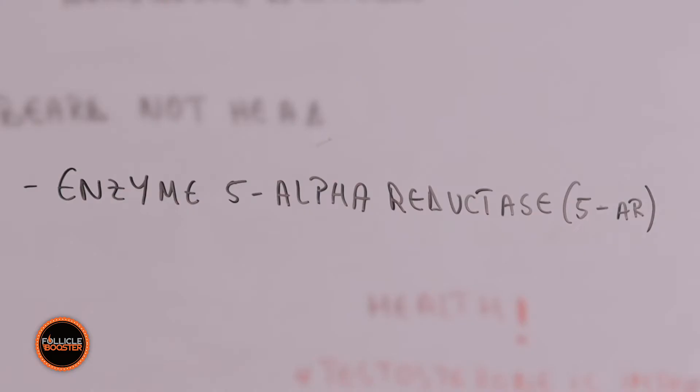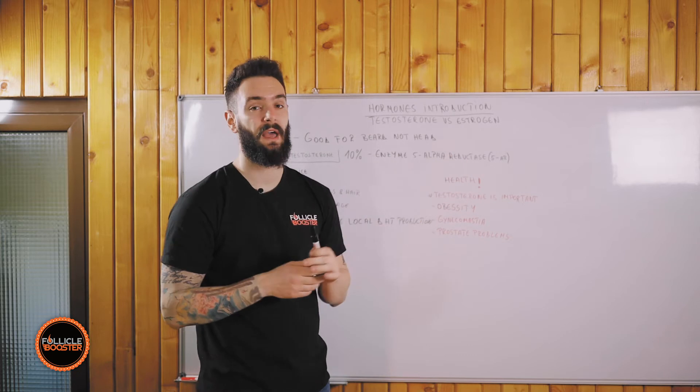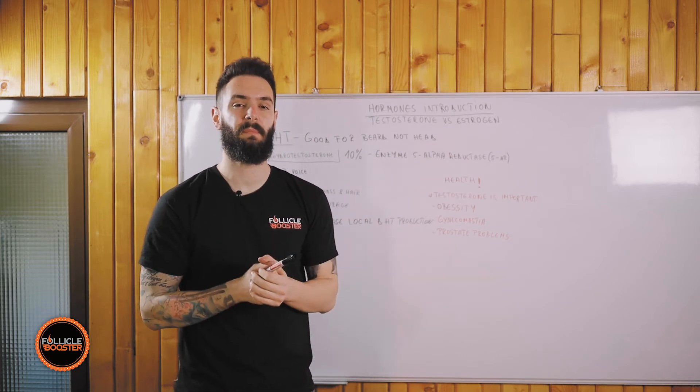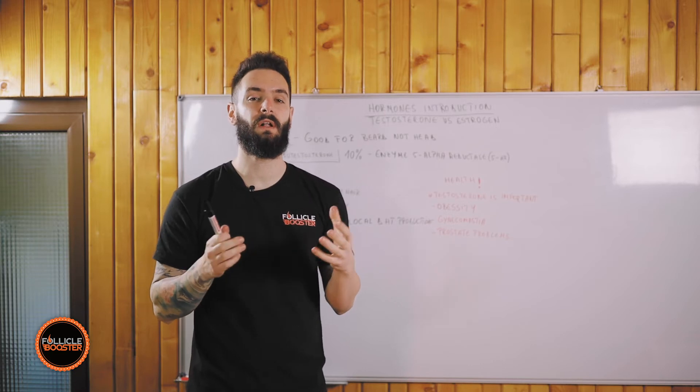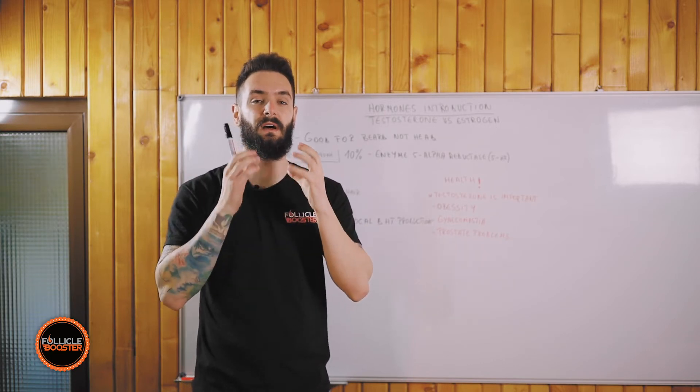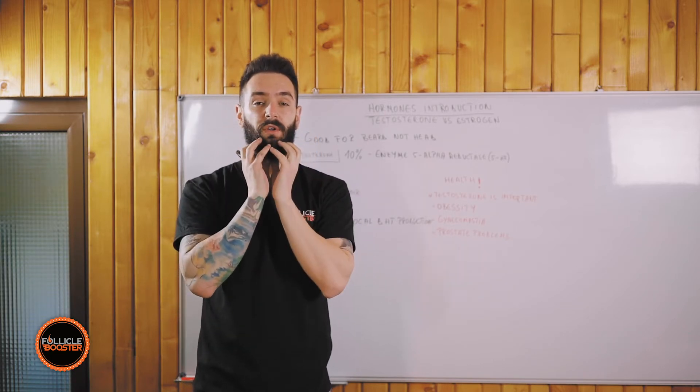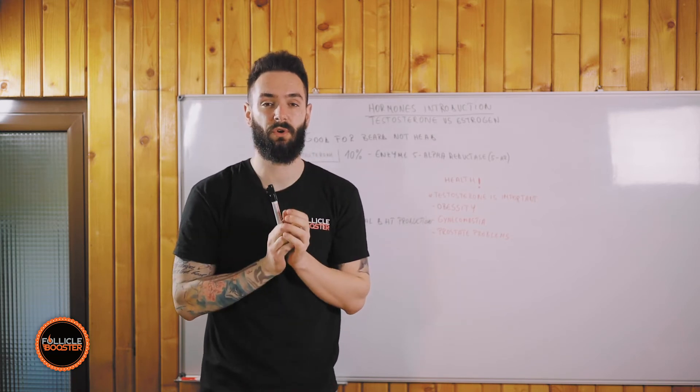It's actually converted from the enzyme 5-alpha-reductase (5-IAR). The ideal part in DHT is to have a local production to boost the production of DHT only on your beard and not on your head.